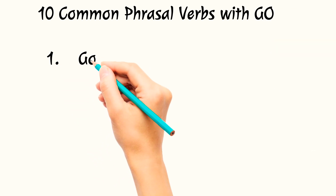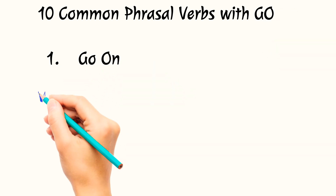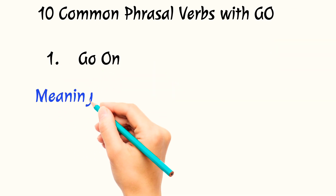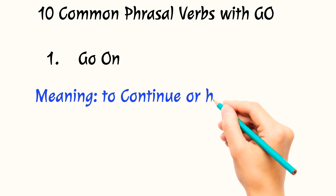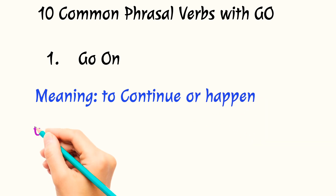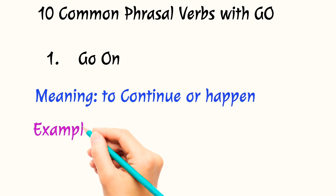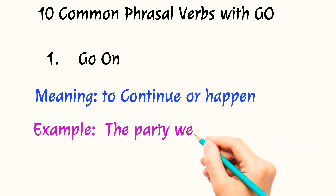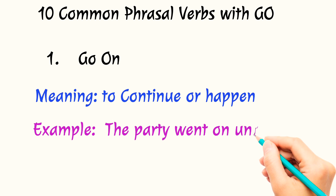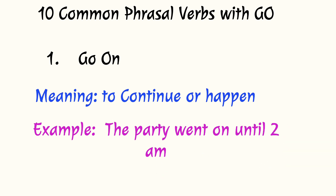The first common phrasal verb is 'go on.' It means to continue or to happen. For example: the party went on until 2 a.m.